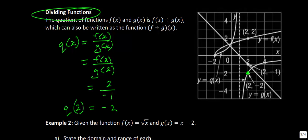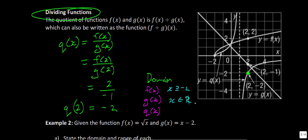Looking at the domain for q(x): f(x) has domain x ≥ −2, and g(x) is all reals. So q(x) starts with x ≥ −2, and you can see values at x = −2 going in the positive direction. However, there are values that don't work — so the domain is x ≥ −2, with the exception that x cannot equal 1.